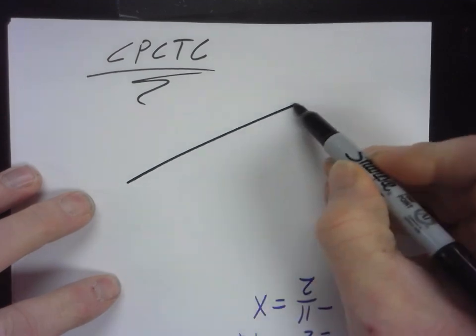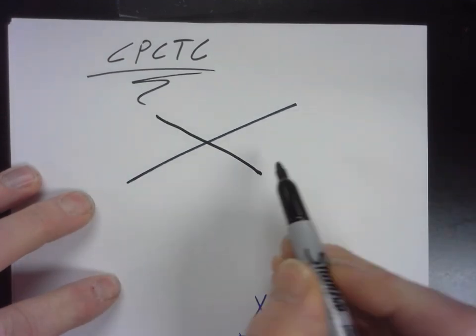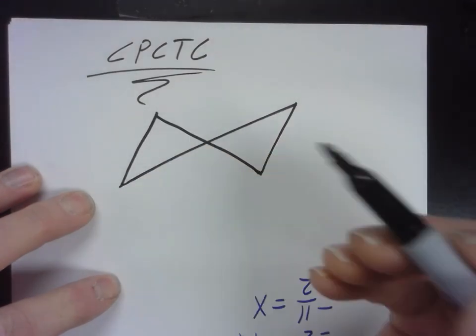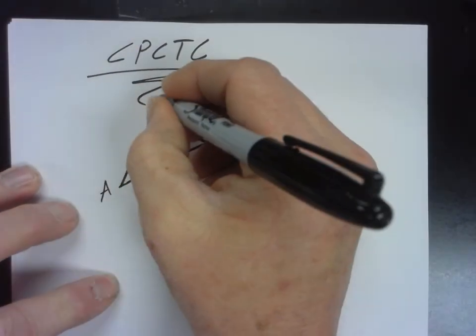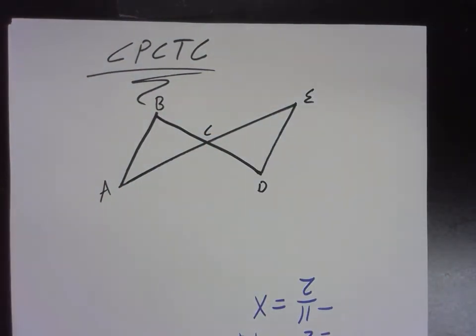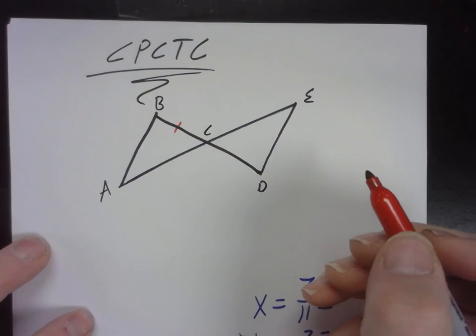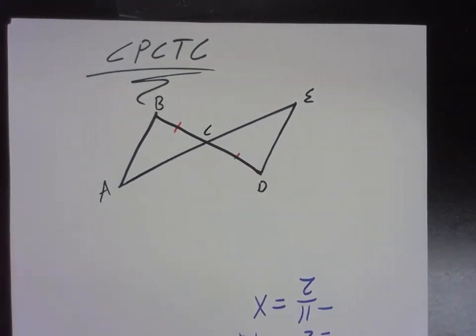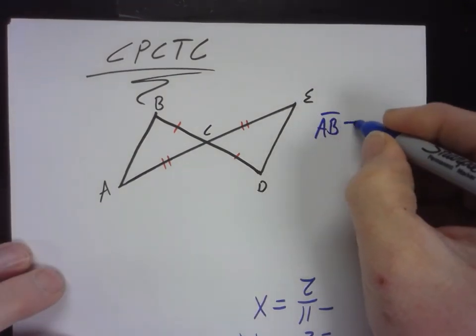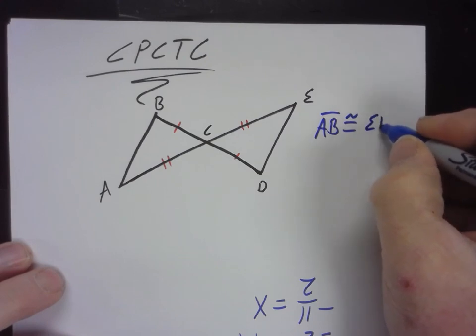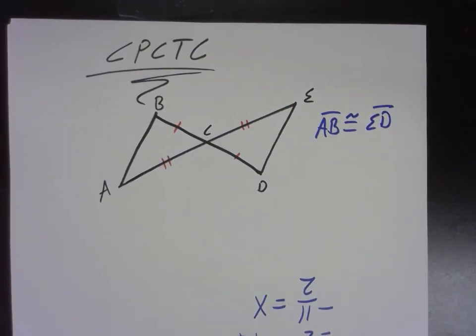Let me just draw a couple of triangles here. Let's say, let me give you some information. So let's say BC and DC are congruent, and AC and EC are congruent. And your job is to prove that segment AB is congruent to segment ED. Got it? So let's think about how we could do this. First of all, do you think they are congruent?